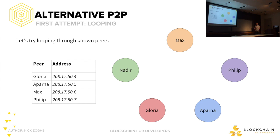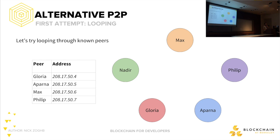How does a decentralized model work? You have five peers on a network, and each of them have a table of known peers. Nadir has a list of Gloria, Aparna, Max, and Philip with their addresses. If he wants to look for a file, he doesn't need to go through any centralized entity — just ask them directly.